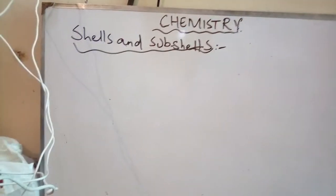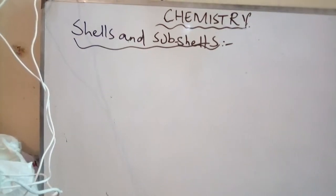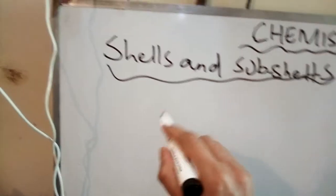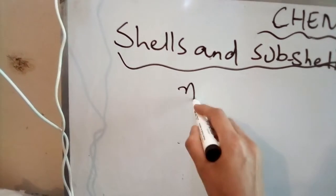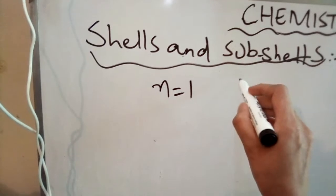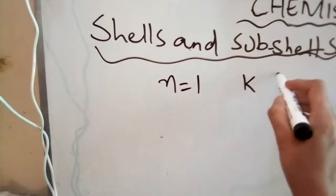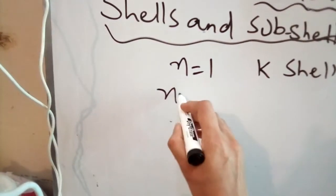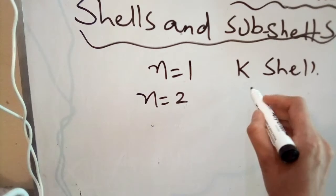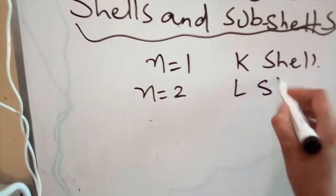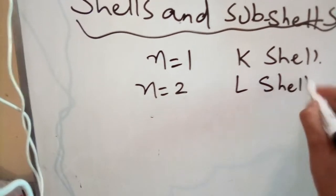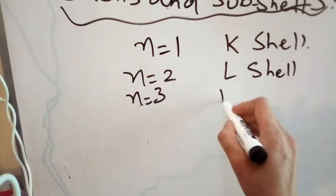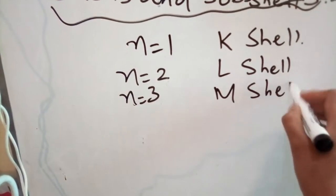For example, if we have different shells around the nucleus, then if n is equal to 1, then the first shell is called as K-shell. If the value of n is equal to 2, then the shell is called as L-shell. If n is equal to 3, then the shell is called as M-shell.